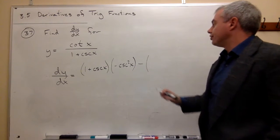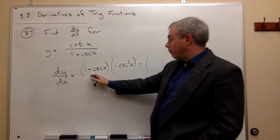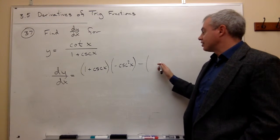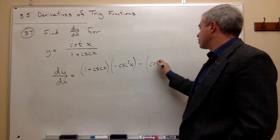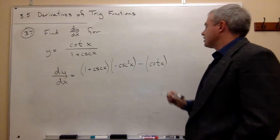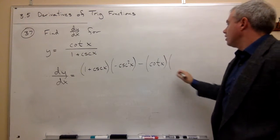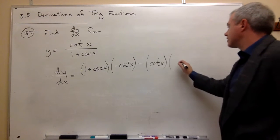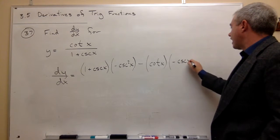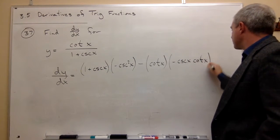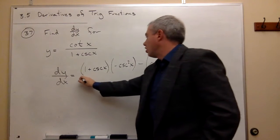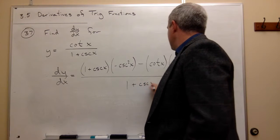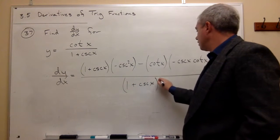Minus the derivative. So we took the bottom times the derivative of the top minus, next it's the top left alone, in other words cotangent of x, times the derivative of what's on the bottom. Well, the derivative of 1 is 0, and the derivative of cosecant of x is negative cosecant of x cotangent of x. And that's all over the bottom, which is 1 plus cosecant of x, quantity squared.